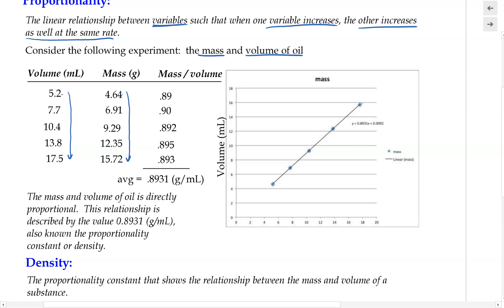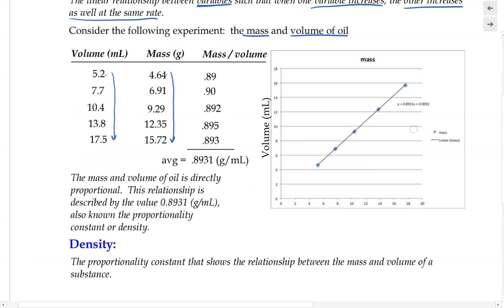We can conclude that the mass and volume of this oil are directly proportional. Whenever we have two variables that are directly proportional, we can further describe that by calculating something called the proportionality constant. In this case, the proportionality constant showing the relationship between the mass and volume of oil is 0.8931 gram per milliliter.